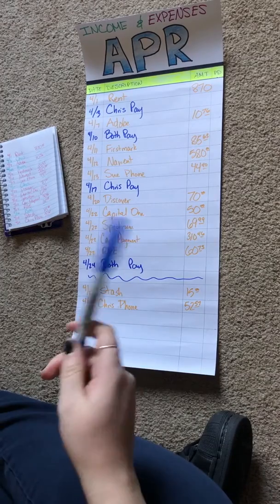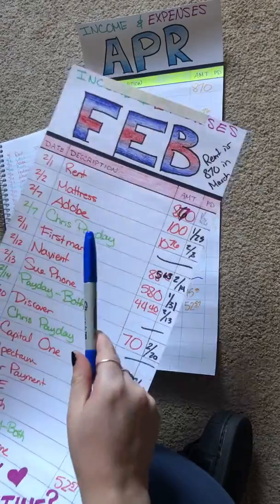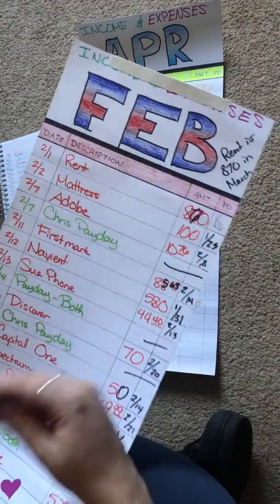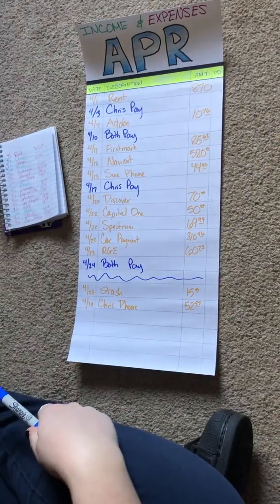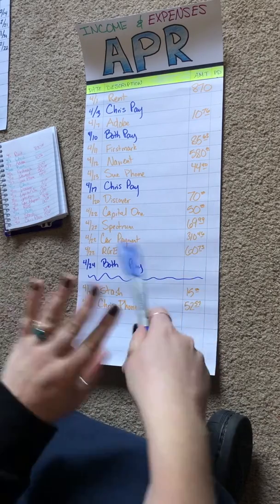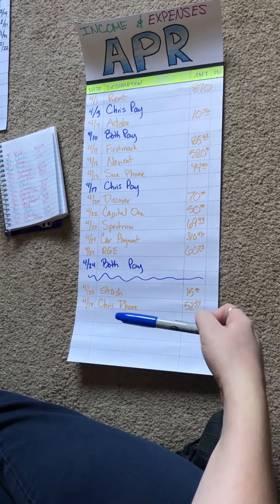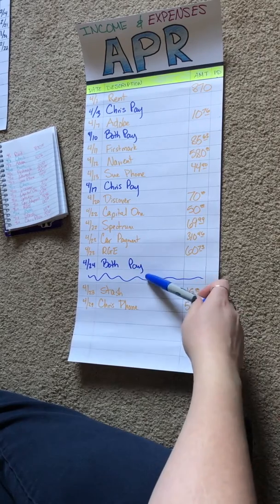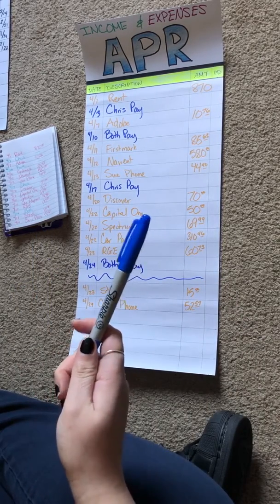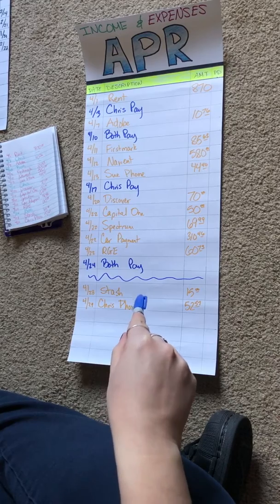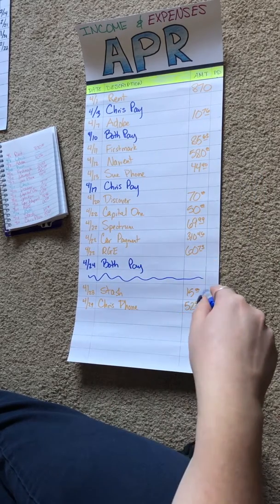So you may have noticed a couple of things when I was transferring. The mattress — we actually fully paid that off last month, so that is gone, not on here at all anymore. You'll also notice this squiggly line right here. That is because I can't count lines and I accidentally skipped one too many. All these things on the 22nd threw me off.